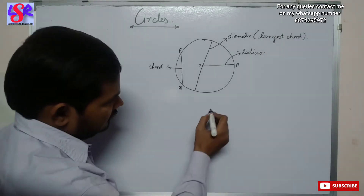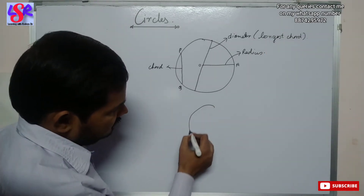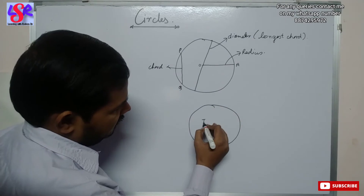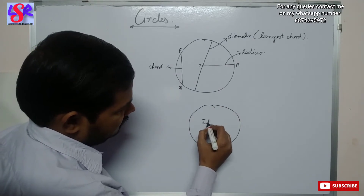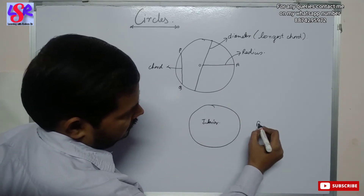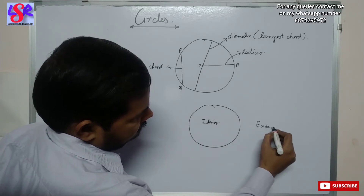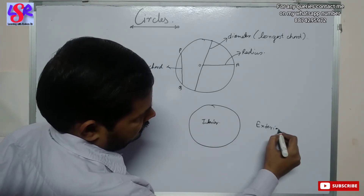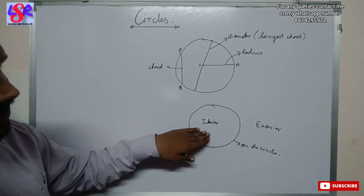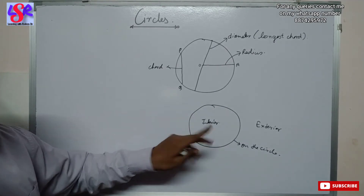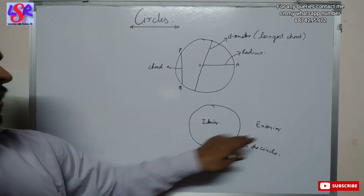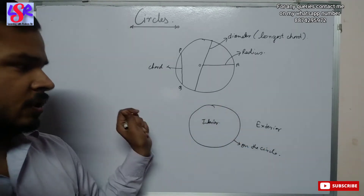The circle divides the plane into three regions: the interior of the circle, the exterior of the circle, and on the circle.